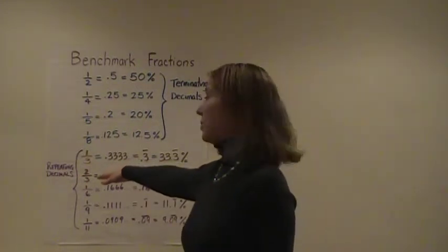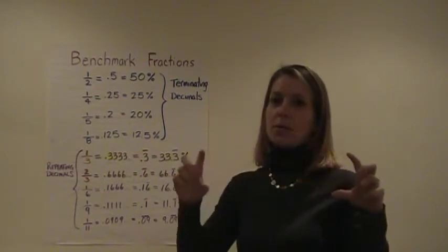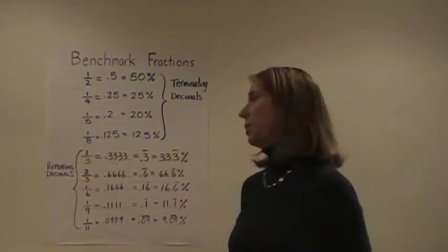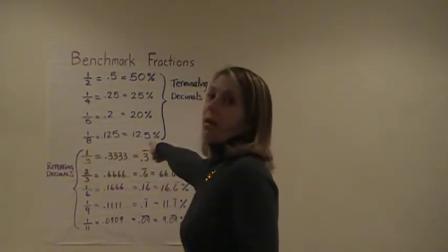The repeating decimals are a little bit harder. If you take 1 divided by 3 on a calculator, it will show you a whole series of .333333. The way we can represent that is by writing .3 with a little line over it.